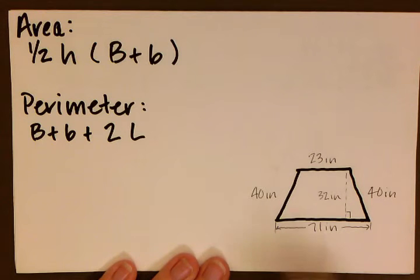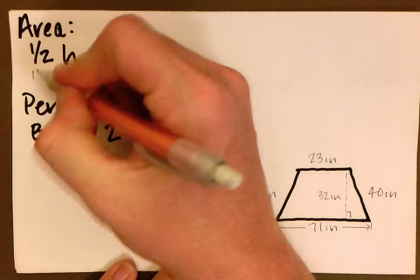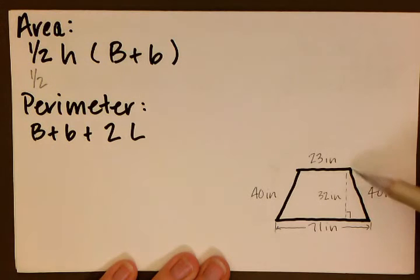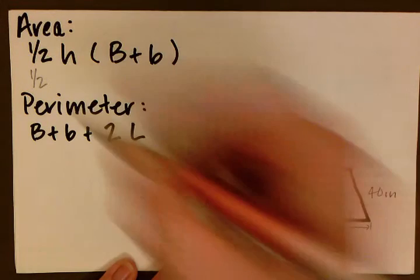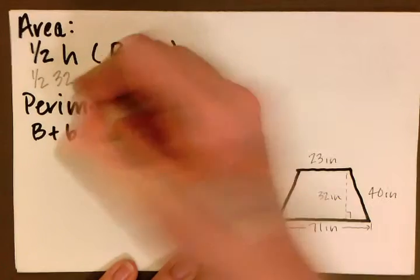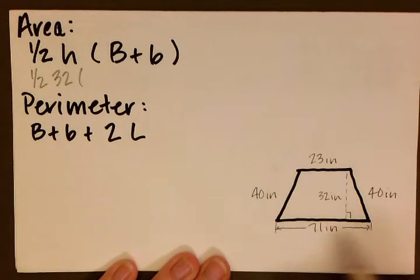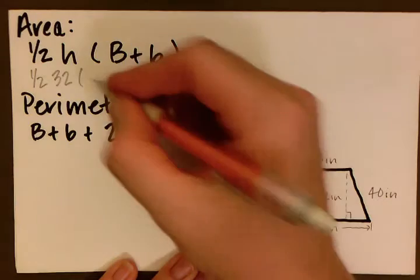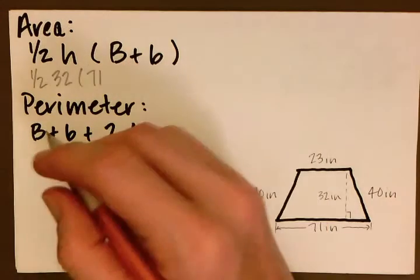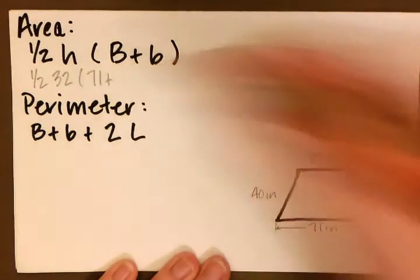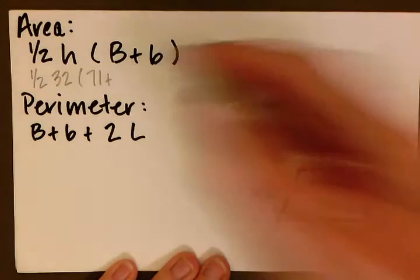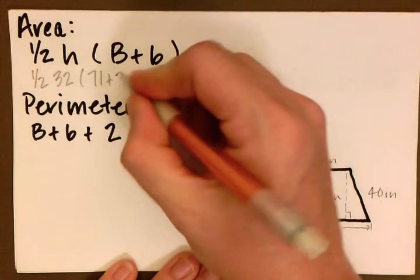So we're going to take these numbers and plug them back into our formulas and then we can solve. So we have one half. Our height is the height of the trapezoid here, so that's going to be 32. We're going to multiply that by our uppercase B, which is our larger base, which is 71. We're going to add to that our smaller base, which is 23.